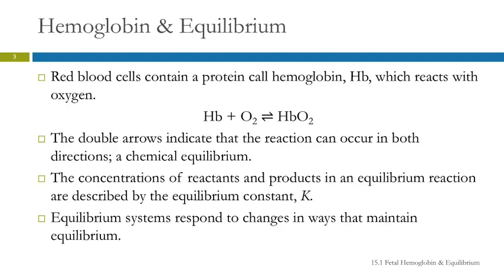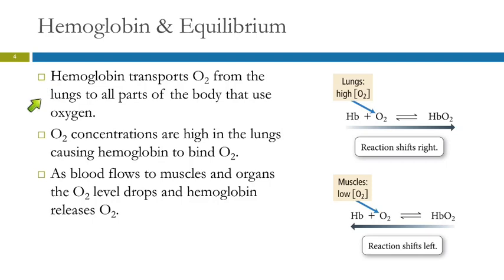We'll also be talking about Le Chatelier's principle. Equilibrium systems respond to changes — such as a change in one of the reactant concentrations — in a way that maintains the equilibrium. Hemoglobin transports oxygen from your lungs to all parts of your body. In the lungs, high oxygen concentration causes the reaction to shift to the right. In your muscles and organs, the oxygen level is low, so the reaction shifts to the left, and the hemoglobin releases oxygen.